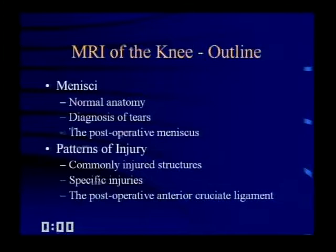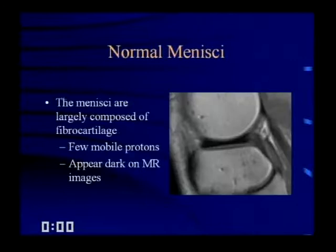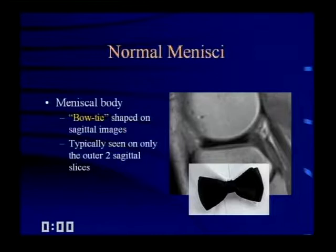Identification of meniscal tears remains a primary indication for MRI of the knee. It's more accurate than physical examination, and it can influence clinical practice by allowing one to avoid unnecessary arthroscopy and by allowing the radiologist to identify alternative diagnoses. The menisci are largely composed of fibrocartilage, which has few mobile protons, and therefore they appear dark on all MR sequences. The meniscal body has a bow-tie shape on sagittal images, typically seen on only the outer two sagittal slices, assuming about a four-millimeter slice thickness.